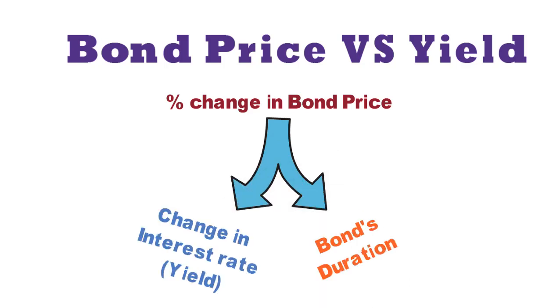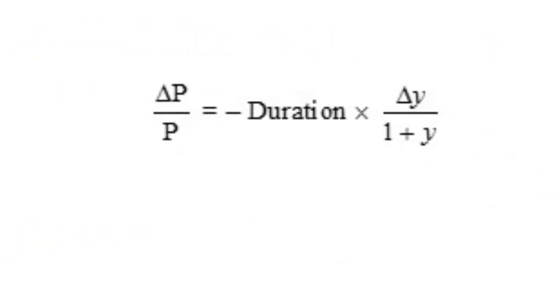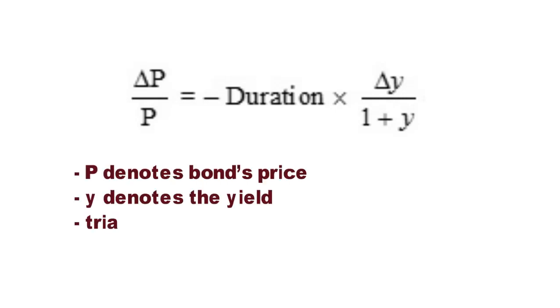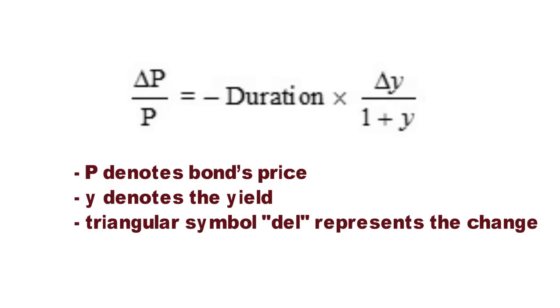The formula for interest rate risk of a bond is this, where P denotes bond's price, Y denotes the yield, and the triangular symbol del represents the change.